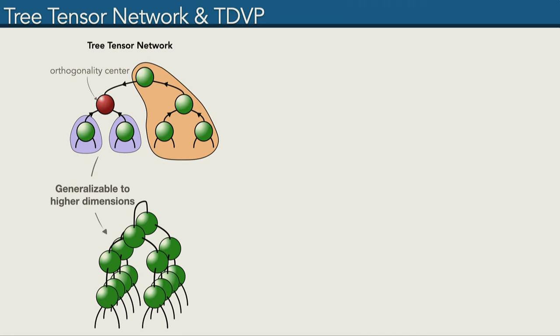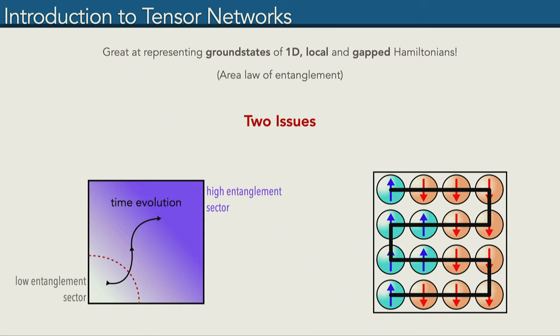However, what we are actually after is not finding ground states and also not one dimension. First of all, we want to do time evolution to look at these thermalization processes. Time evolution typically leads us towards high entanglement, because as time evolves, correlations are being built up in the system. Furthermore, in the two-dimensional lattice, it is not quite clear what architecture to use. If we take this one-dimensional Matrix Product State, there's no good way to map it onto this two-dimensional structure. Similarly, PEPS, which are the generalization of Matrix Product States to two-dimensional lattices, have some issues because of loops present in the architecture.